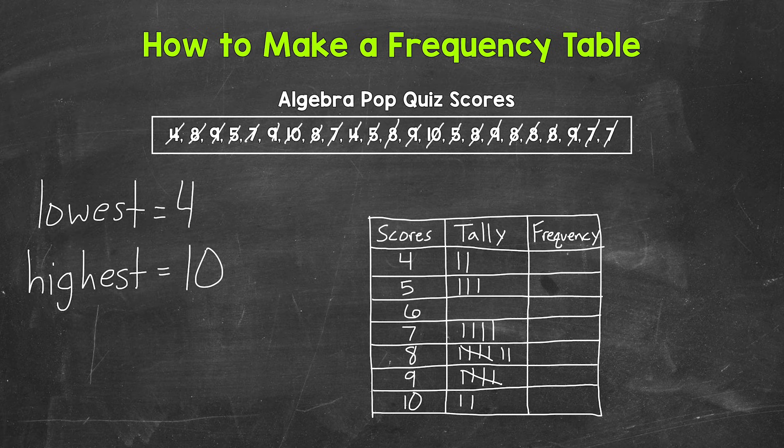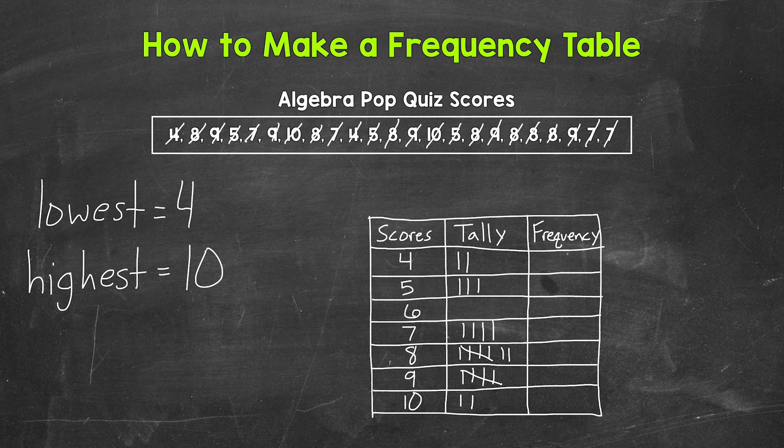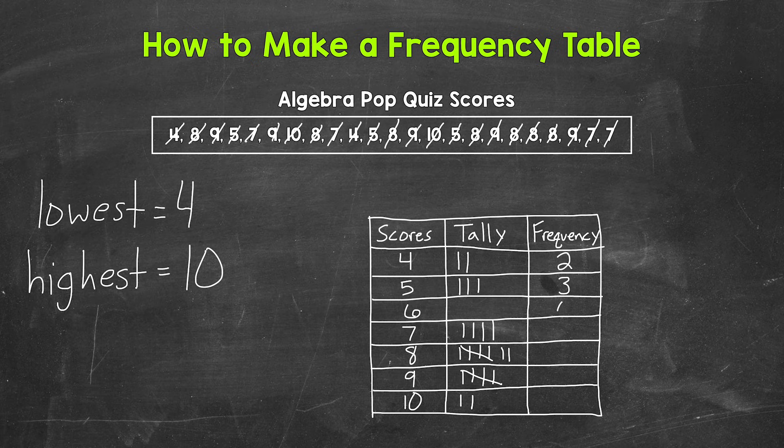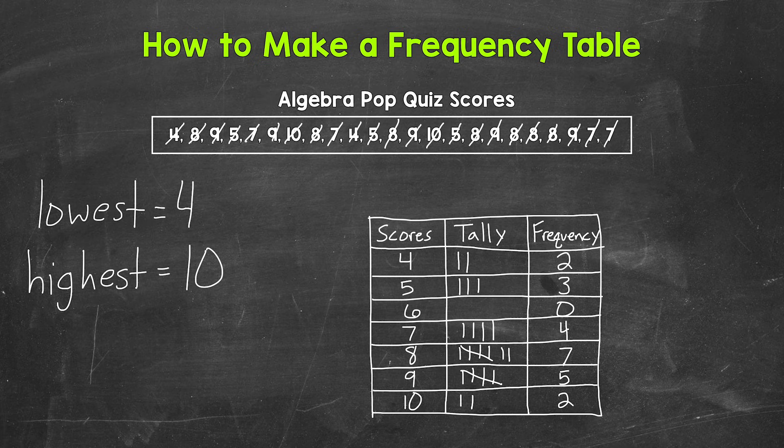Now that we worked through the data and we have a tally for each score, we can count up the tallies for the frequency of each score. So let's start with the score of four out of 10. How many students had a four out of 10? Well, two. How about a five out of 10? Three, a six, zero, a seven, four, an eight, seven, a nine, five, and then a 10, two.